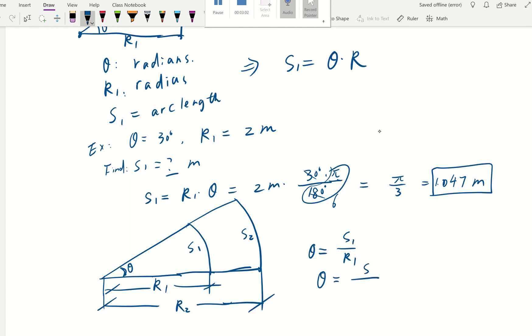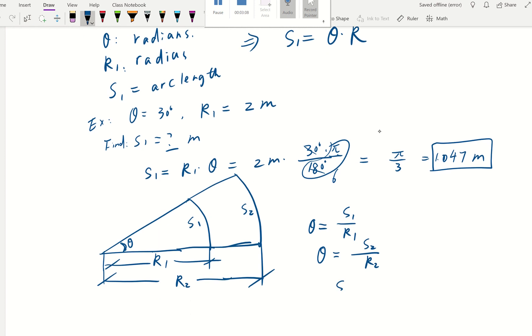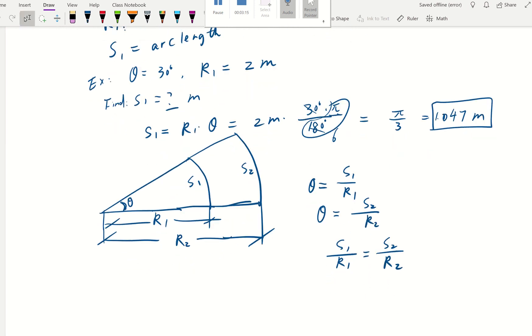And theta is also equal to this greater arc length over greater radius. When we equate them together, then we have s1 over r1 equal to s2 over r2.